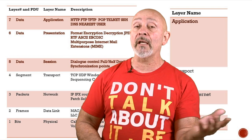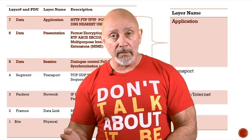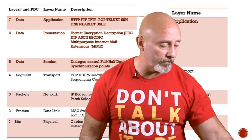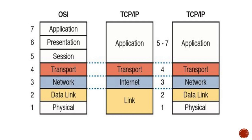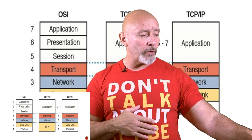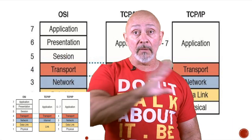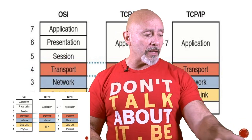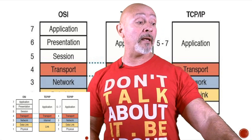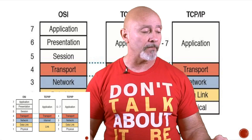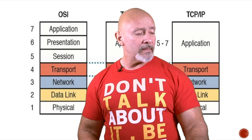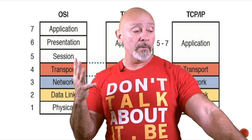So: OSI has seven layers, TCP/IP model has four layers — that's what you need to know to pass these tests. Now you can see behind me the OSI, the four-layer model, and the five-layer model. Look at the mapping — Transport maps to Transport, Application maps to layers five through seven, Transport maps to Transport, Network to Internet or Network.